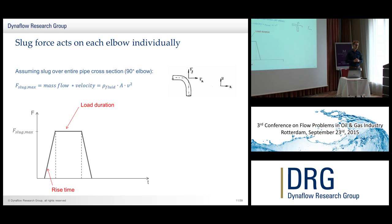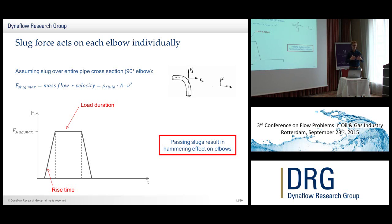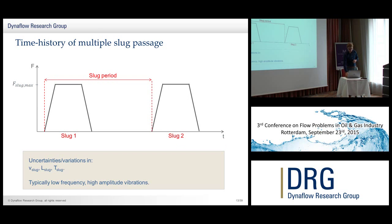The forces created on your piping are related to the momentum change, calculated using mass flow times velocity — so you end up with fluid density times the cross-section of your pipe times the velocity of your slug. The force feature shows a rise time as soon as the slug enters your bend, and then a load duration as long as the slug is within the bend. So basically, a slug passing through a bend gives a hammering effect on that bend. The load duration depends on your velocity and the length of the slug.